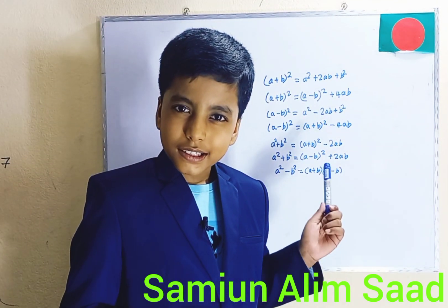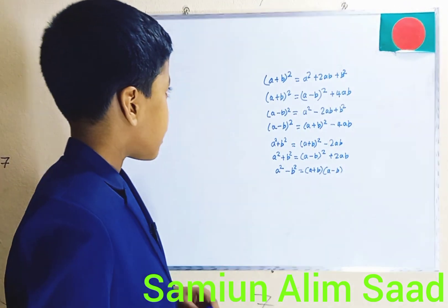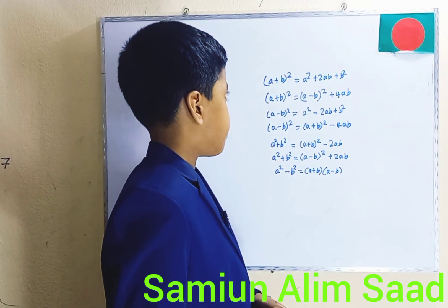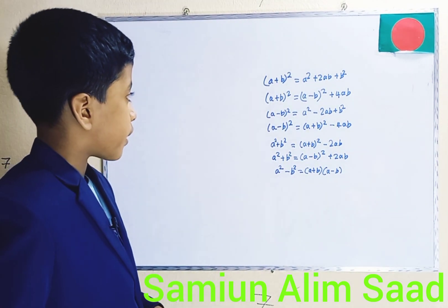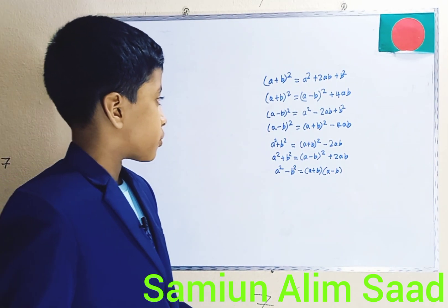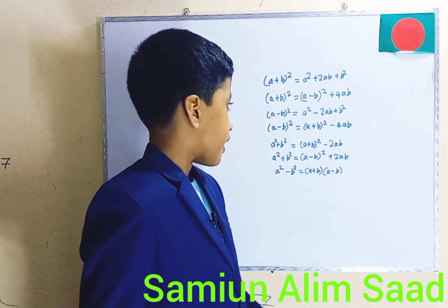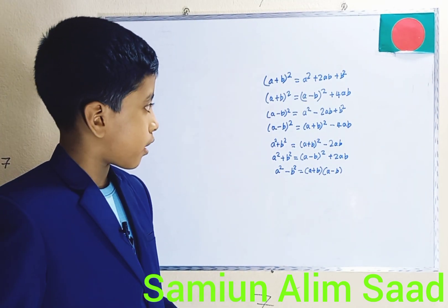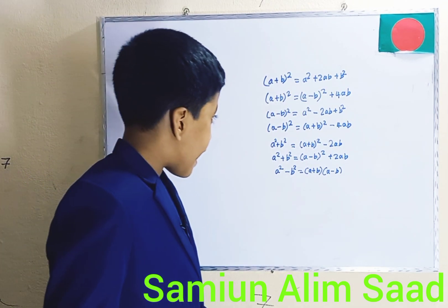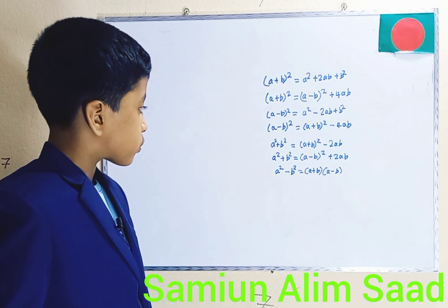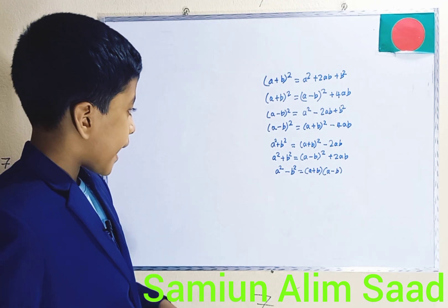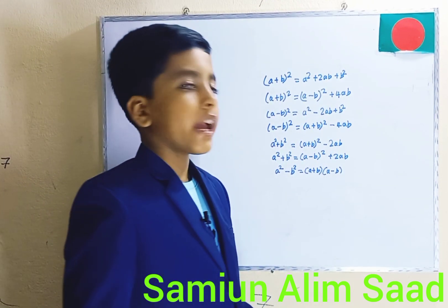Let's repeat all the formulas so you can remember them. A plus B whole square equals A squared plus 2AB plus B squared. A plus B whole square equals A minus B whole square plus 4AB. A minus B whole square equals A squared minus 2AB plus B squared. A minus B whole square equals A plus B whole square minus 4AB. A squared plus B squared equals A plus B whole square minus 2AB. A squared plus B squared equals A minus B whole square plus 2AB. And finally, A squared minus B squared equals A plus B times A minus B.